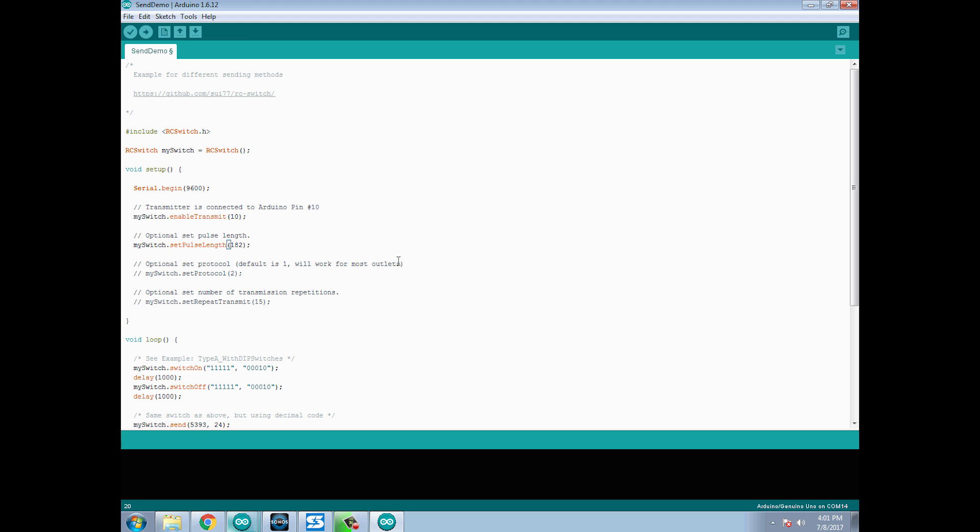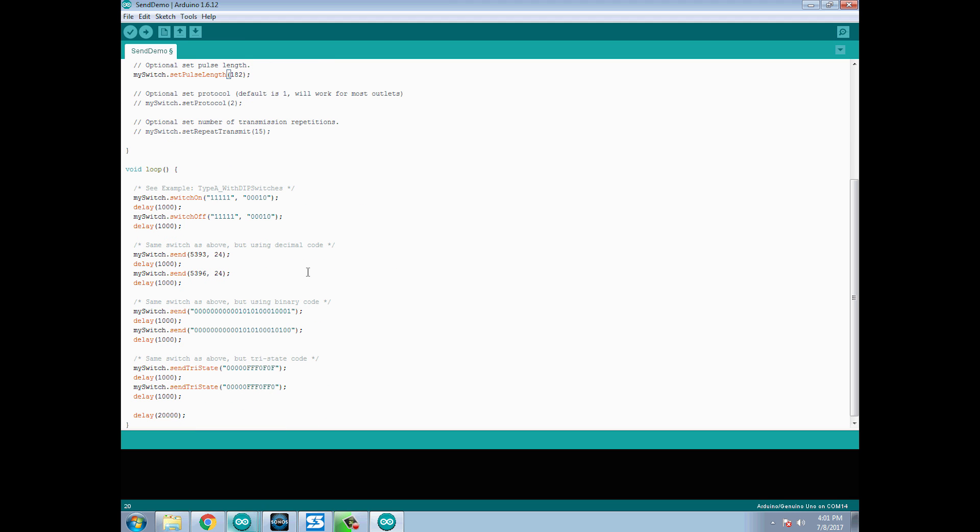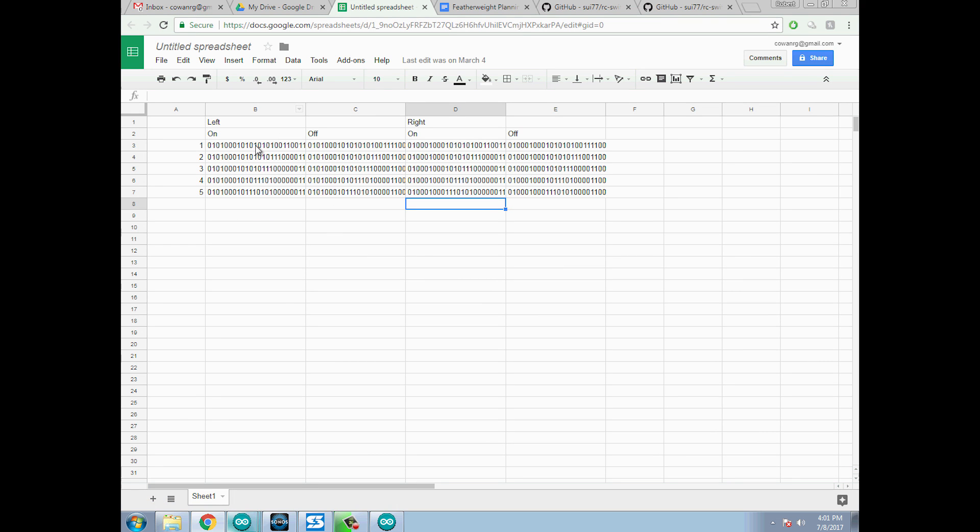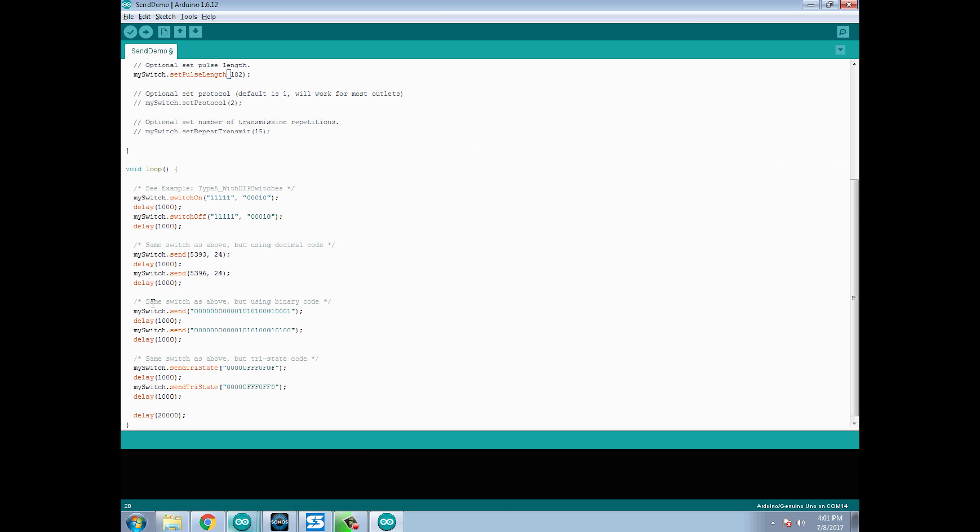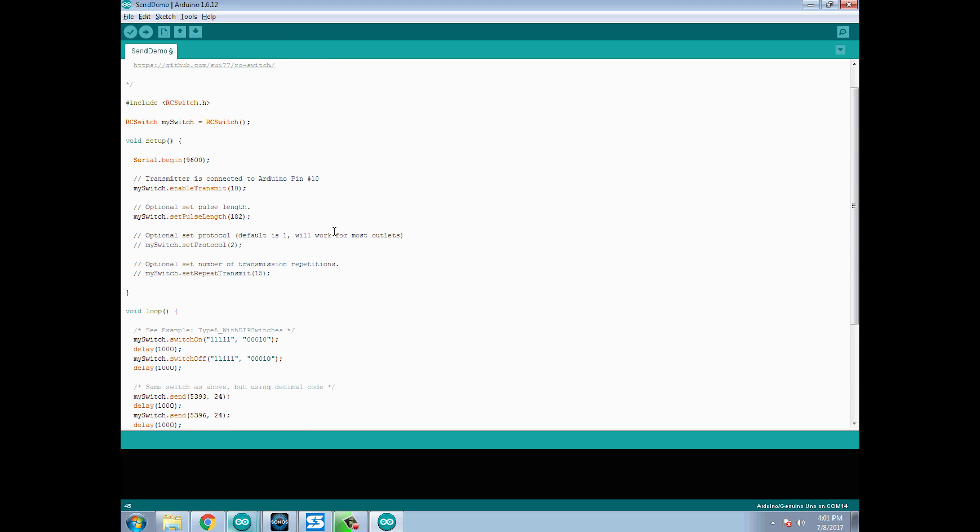So we need to remove these comments and then change this to the pulse length of whatever your remote is. Mine was 182. So now that I have that set I can go back in my document and copy this command into the binary command right down here, upload this and the Arduino will then send that command. It's that simple, and keep in mind that this is connected to pin 10. You can change this to pretty much whatever pin you want.